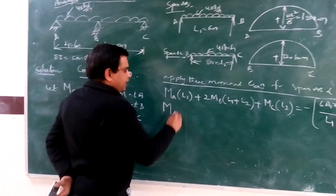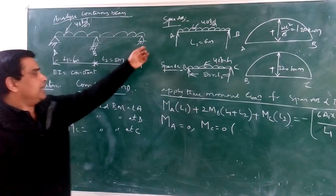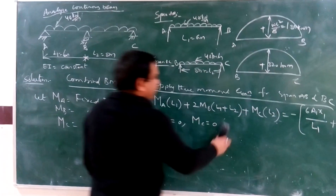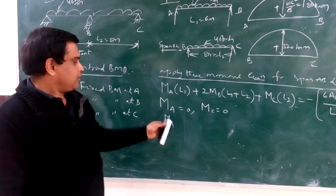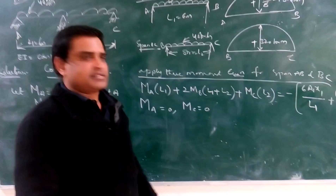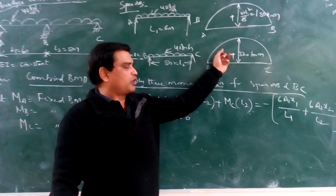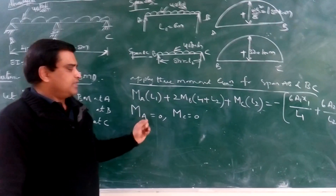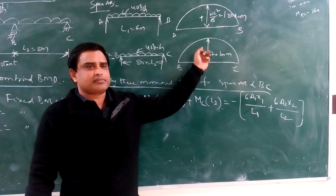Since the fixed-end bending moment at A is 0 and the fixed-end bending moment at C is 0, because the left support is simply supported and the right support is simply supported, there will be no fixed-end bending moment at those ends. Fixed moments are reaction moments that occur when the beam is fixed at both ends. The maximum bending moment at the center is the free bending moment for the simply supported case.